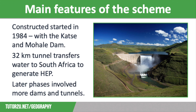Later phases of the project included the Tsaliki Dam, built at the confluence of the Tsaliki and Senku Rivers, with a storage capacity of 2,223 million cubic metres and a pumping station, as well as the Nthali Dam and another pumping station 40 kilometres downstream.